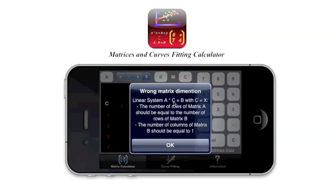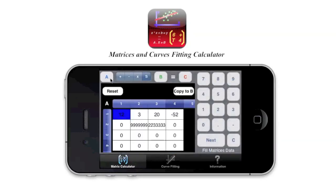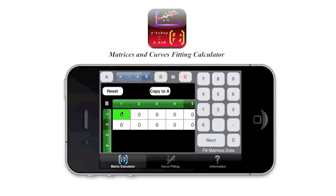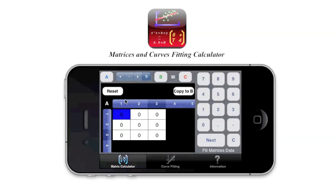So we have A multiplied by C equal to B, with C equal to X. So let's do our modification. Let's try here to have a three by three matrix. And here we have just one by three like that. So let's fill the first matrix.